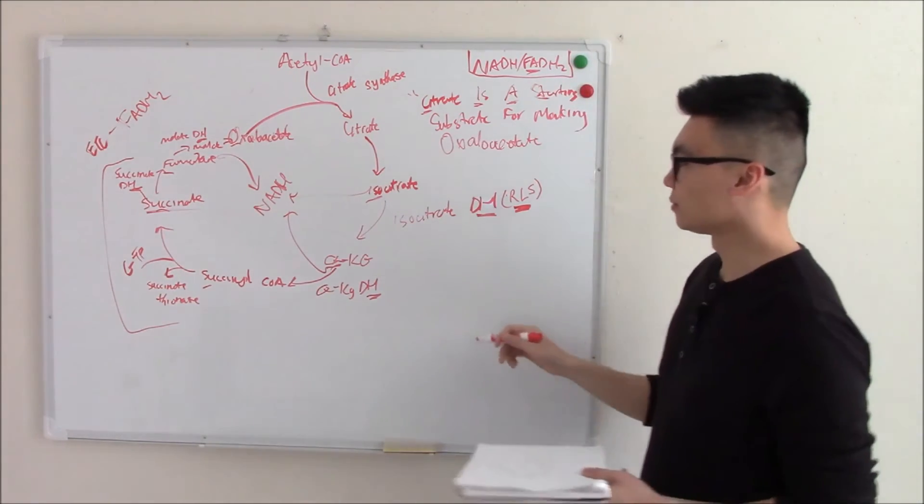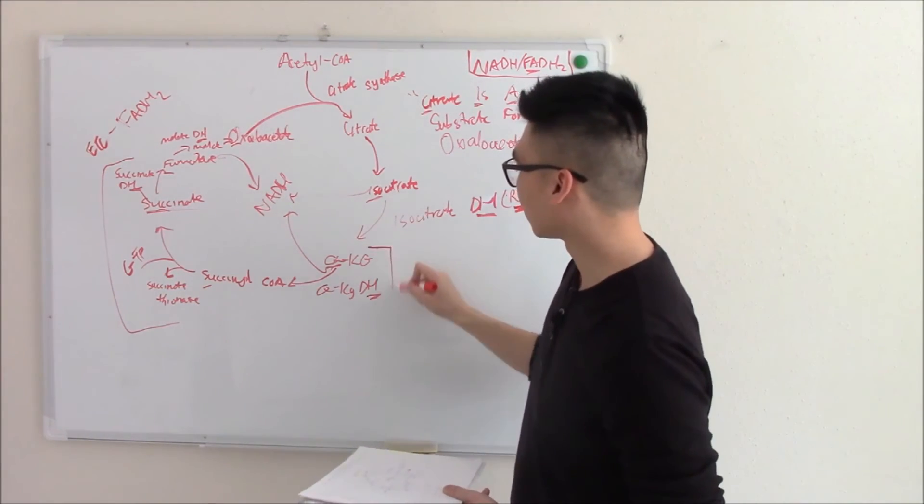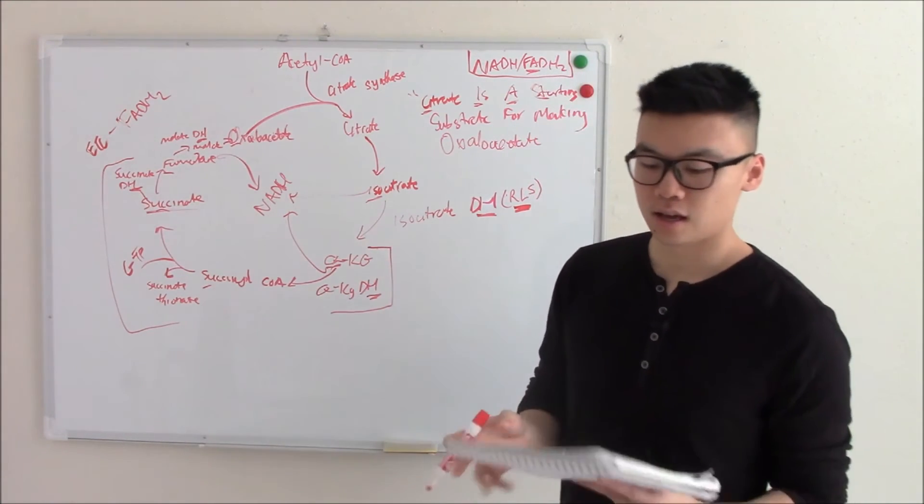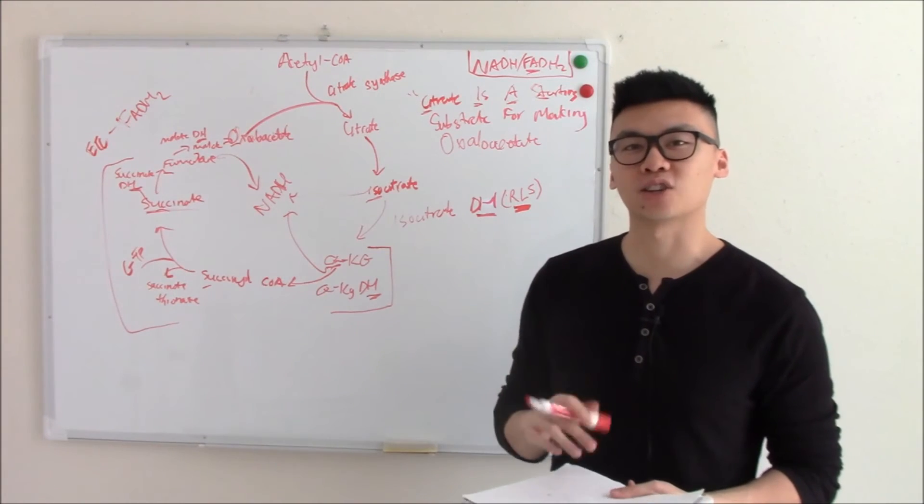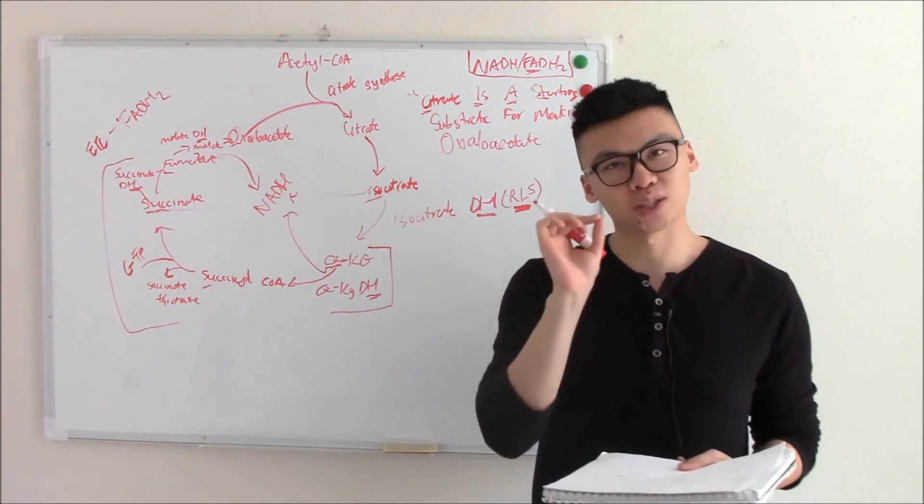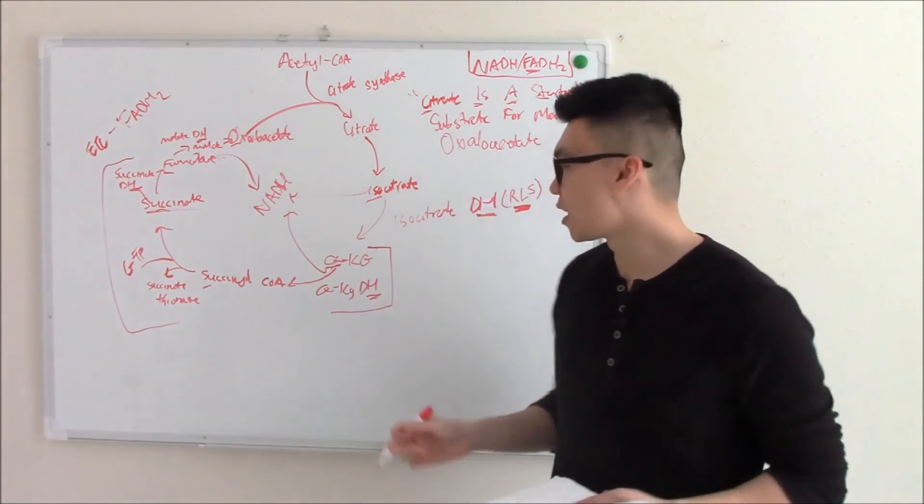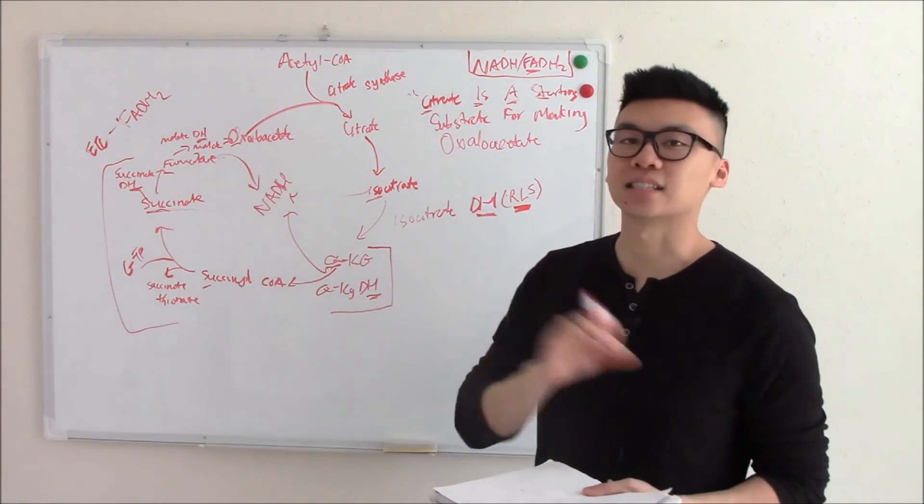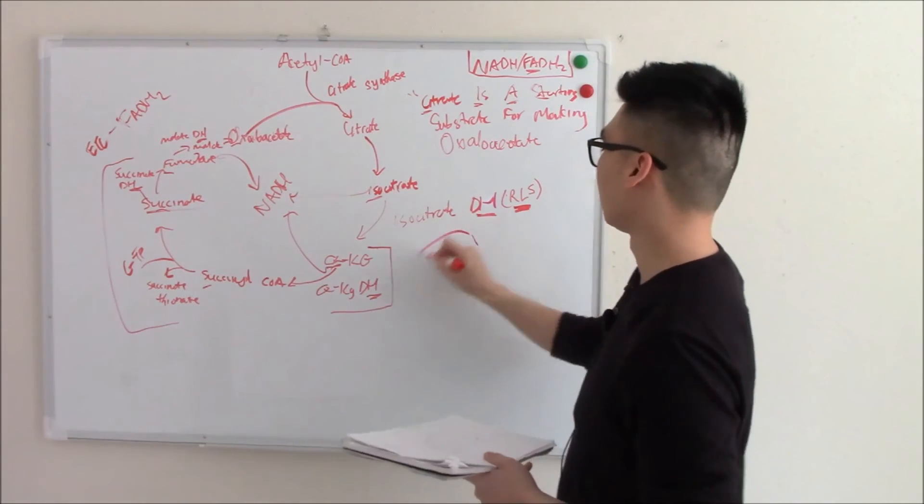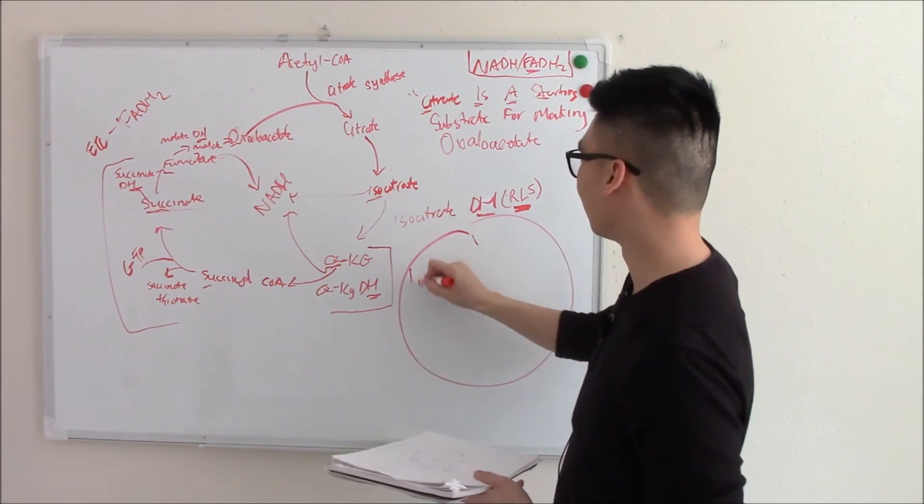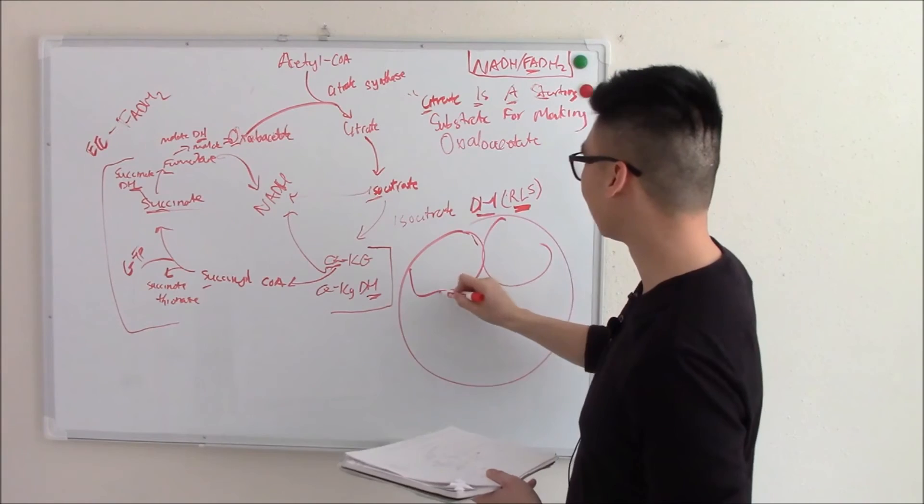All right, one last thing you gotta remember: alpha-ketoglutarate dehydrogenase uses a complex. Remember we talked about pyruvate dehydrogenase has that complex that told you to remember it because we'd be seeing it again? Well this uses the exact same complex. Do you remember what that complex was made out of? It's gonna be your B vitamins, right? I'll even draw the same drawing.